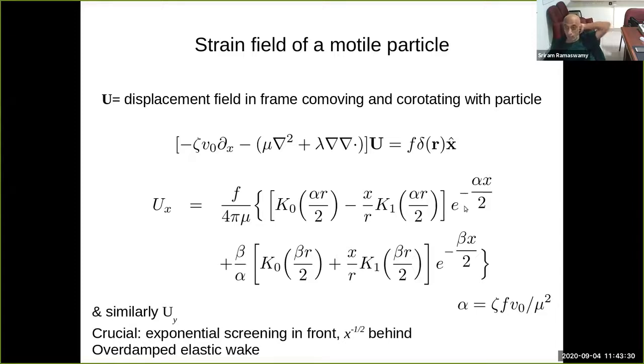It's not evident from this form, but it is evident to those of you who remember your math methods course that the decay of this object along the x axis for positive x and negative x is very different. In front of the particle, the displacement field is strongly screened, exponentially screened as e to the minus alpha x. Behind the particle, it's not screened, it decays only as x to the minus a half. So this is really cool. You've got this particle moving along, it leaves a kind of overdamped elastic wake behind it, which particles behind it can sense. But it pretty much is like a stealth particle as far as what happens in front of it is concerned.